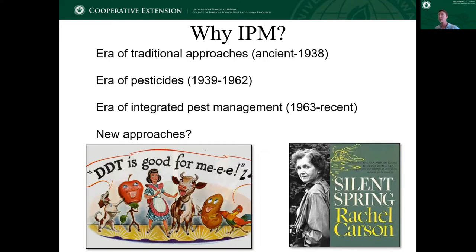This was one of those first red flags that maybe we needed to take a more holistic look and think of a different way to manage pests, instead of relying solely on chemical pesticides. And that brought in this era of integrated pest management — integrating more of those traditional and cultural approaches, and by cultural I mean the things that we do in managing our farms and production, with still using all the tools available, including chemicals, but just in a more judicious way. And we can also think about what might be new approaches moving forward into the future.